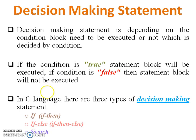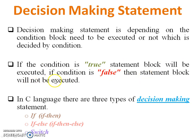A decision-making statement depends on a condition to decide whether a block of code needs to be executed or not. If the condition is true, the statement block will be executed; if the condition is false, the statement block will not be executed. In C language, there are three types of decision-making statements: if, if-else, and switch.